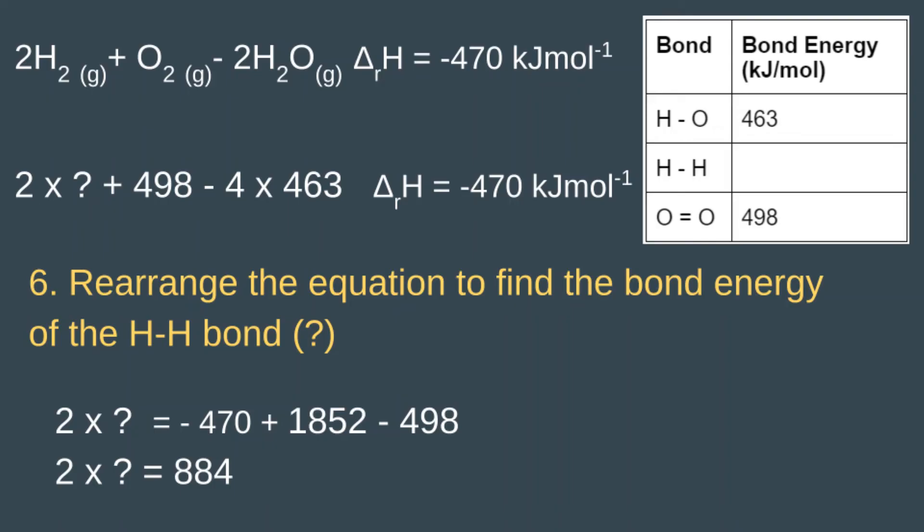So to get rid of the minus 1852, we need to add 1852 to the left-hand side. Now we have two times question mark plus 498 minus 1852 plus 1852, which equals zero. So we have two times question mark plus 498, and we can ignore the zero.